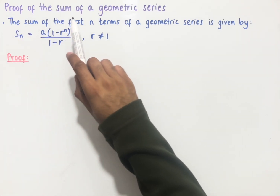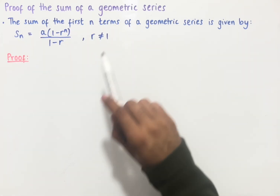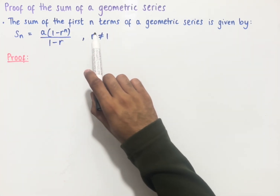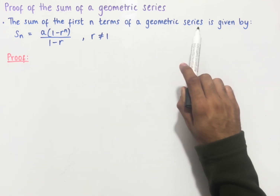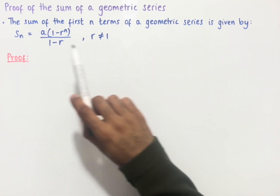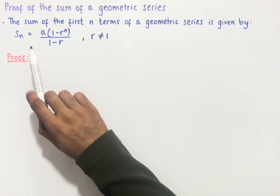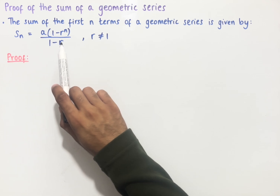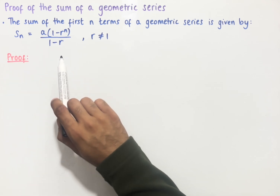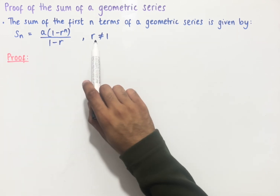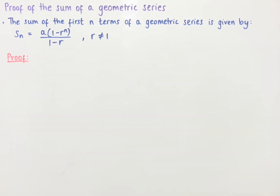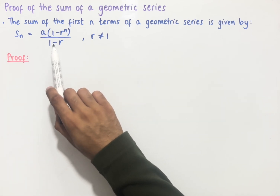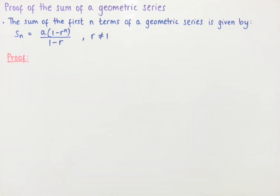Let's look at the proof of the sum of a geometric series. The sum of the first n terms of a geometric series is given by Sn, which equals a brackets 1 minus r to the power of n, all over 1 minus r, where r cannot equal 1, since the denominator would then equal 0 and this would not exist.